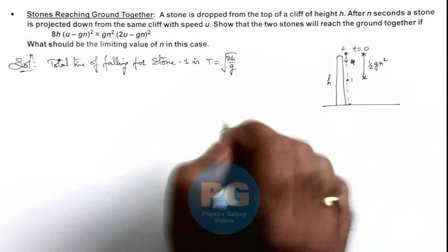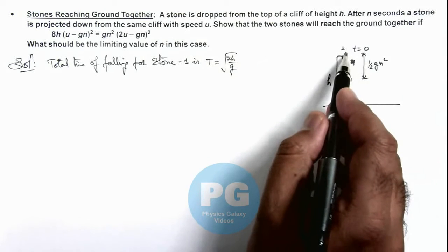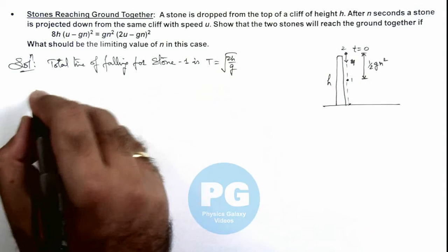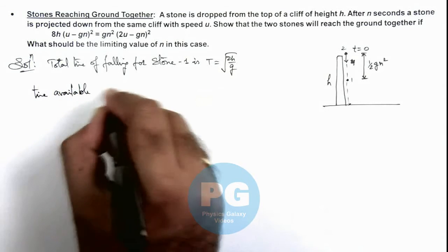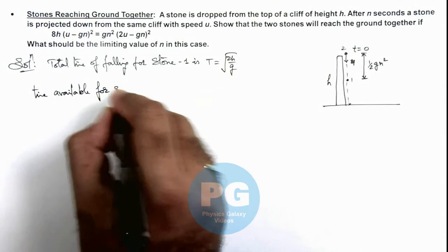If we talk about the second stone, it is projected after n seconds. So we can write the time available for stone 2.